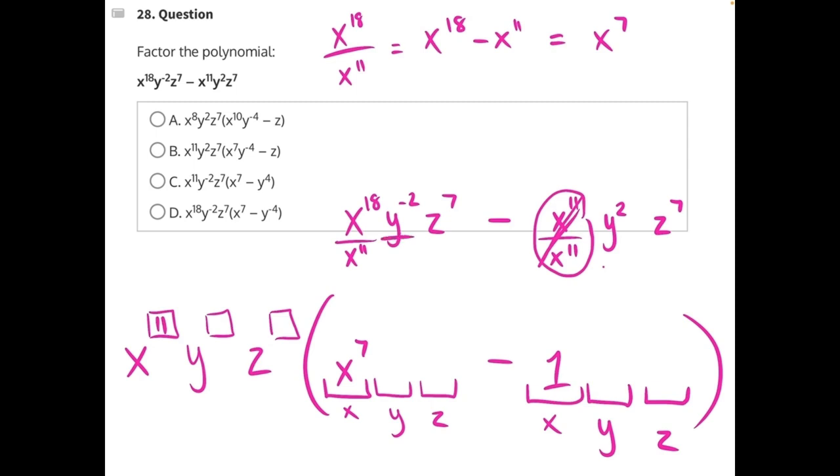What is the greatest exponential power I can pull from both y to the negative 2 and y to the 2? It's going to be y to the negative 2. Here, anything divided by itself is just 1. So this will cancel and give us just the number 1 left over.